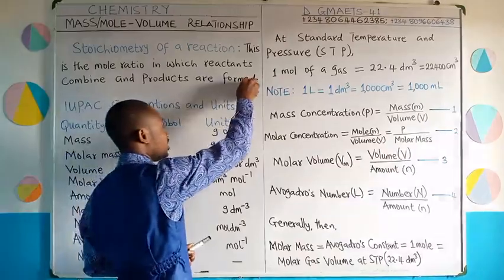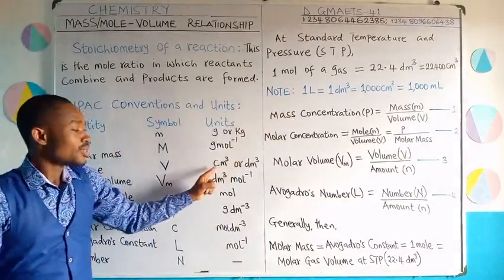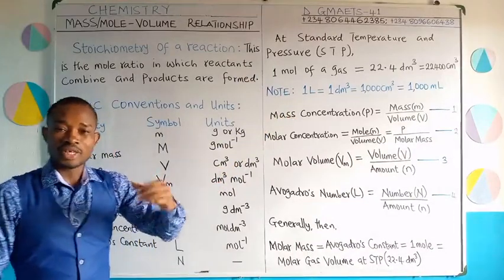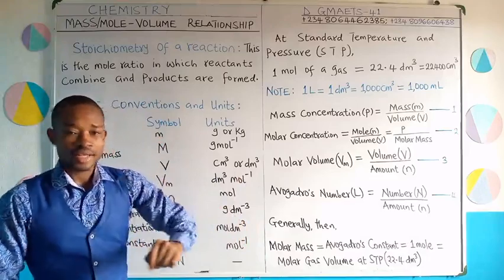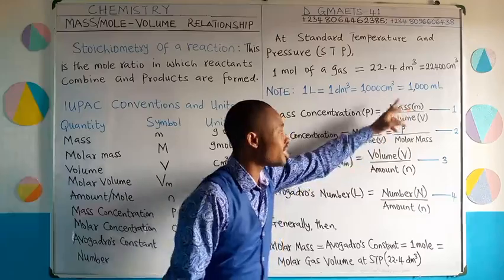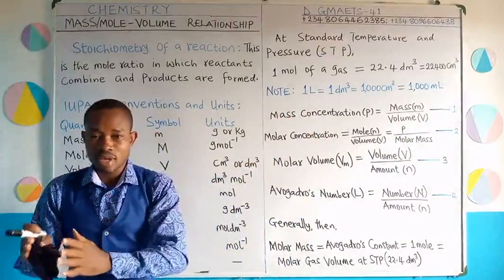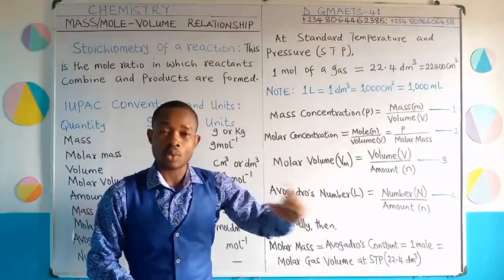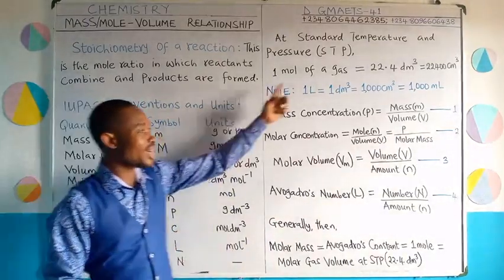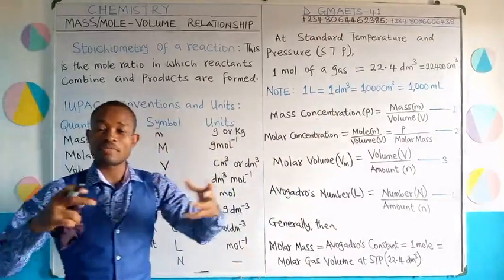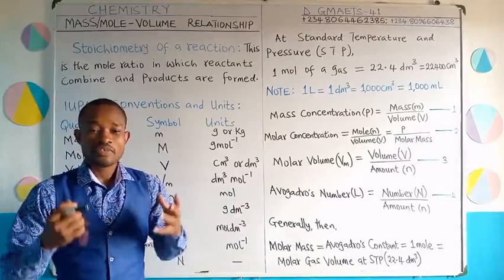It is important to note that the centimeter cube unit has the same value as milliliter (mL). That is why 1000 cm³ equals 1000 mL — they are the same value, so 1 cm³ equals 1 mL. In terms of dm³, 1 liter is the same as 1 dm³. So if I give you 5 liters, that is 5 dm³.